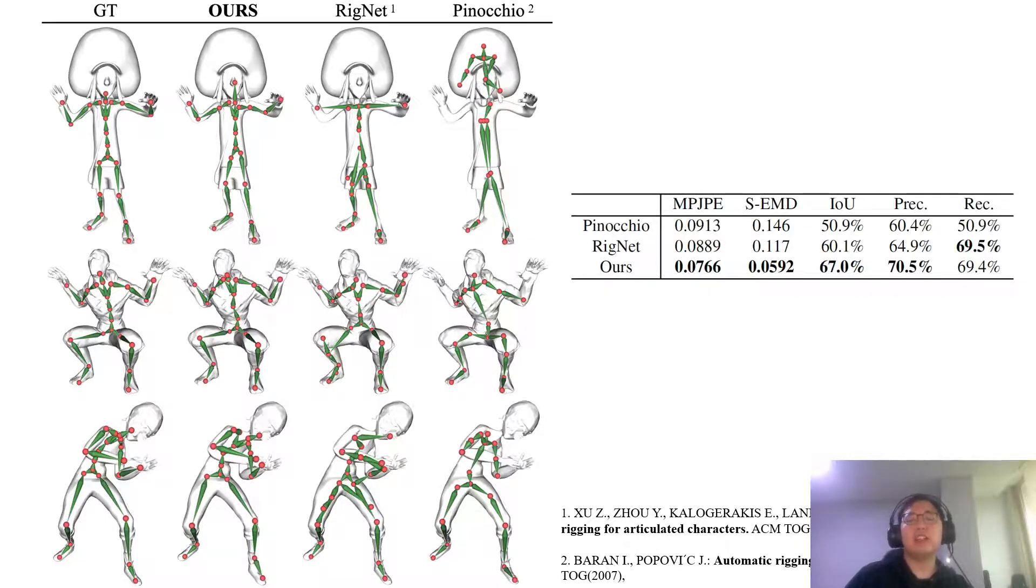For quantitative analysis, we measured errors for joint position and skeletal structure. For joint position error, we used mean per joint position error, intersection over union, precision and recall, which are common metrics also used in human pose estimation. For measuring the quality of the skeletal structure, we defined skeletal earth-mover distance, which is noted as SEMD in the second column.